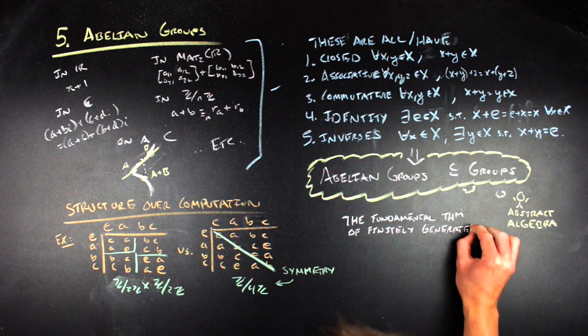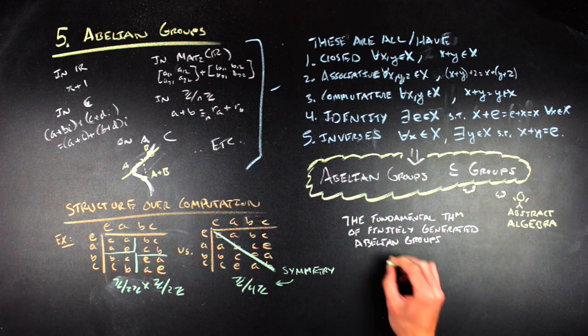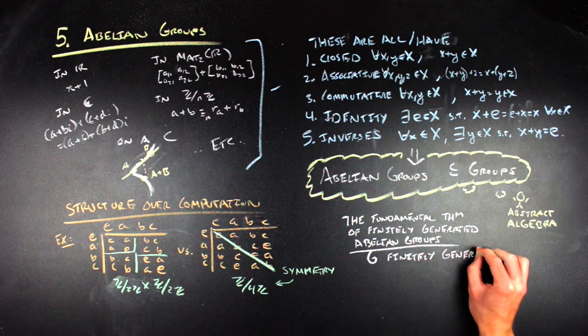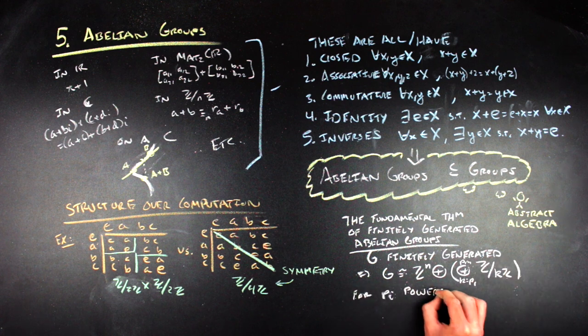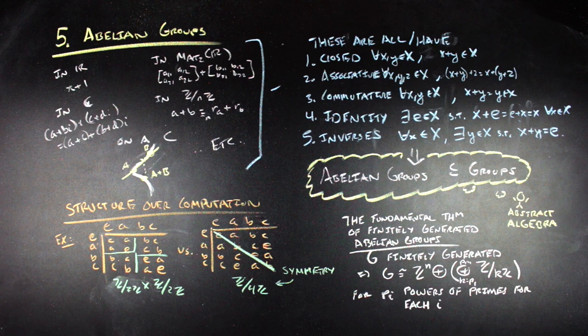This is the fundamental theorem of finitely generated abelian groups. Although it is notationally dense at first glance, it just tells us that all of these versions of addition in the finitely generated case just act like integer addition or a modular addition in each coordinate.